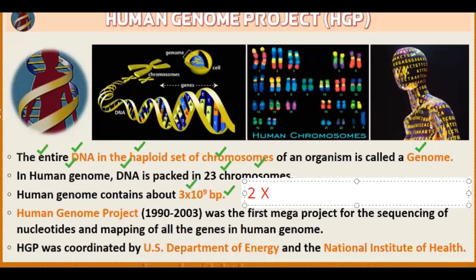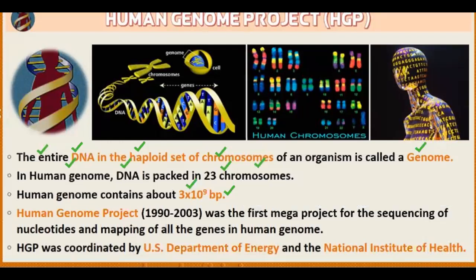In the diploid set, what is the total genetic material? It is 2×3×10⁹. The base pairs in the haploid set will double in the diploid. The Human Genome Project was started in 1990 and completed in 2003. It was the first mega project for the sequencing of nucleotides and mapping of all the genes in the human genome.